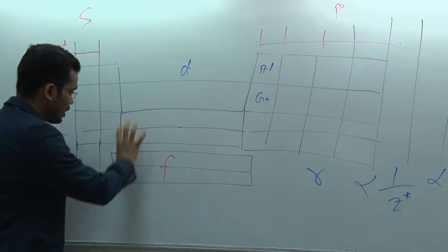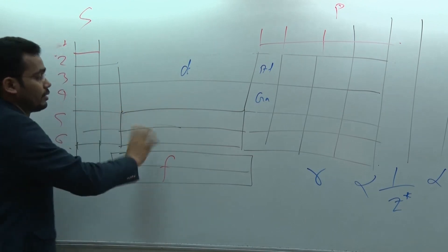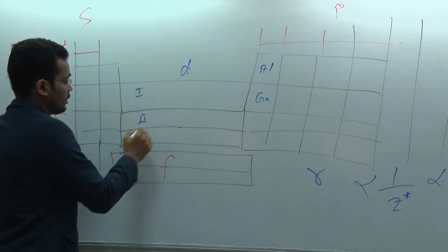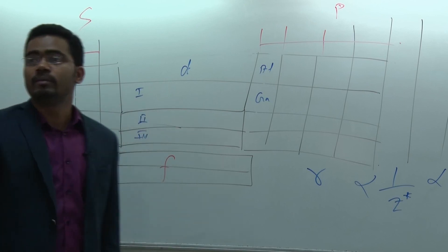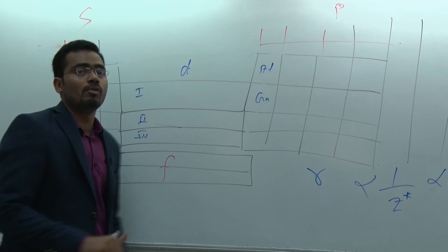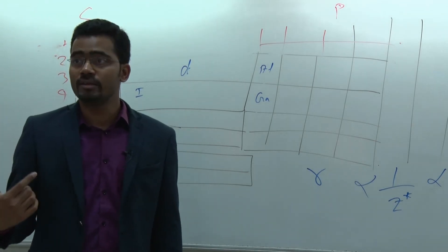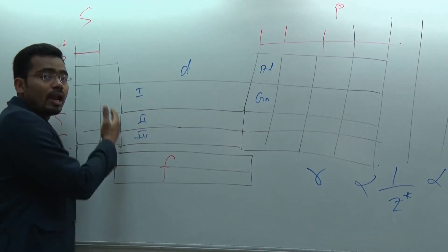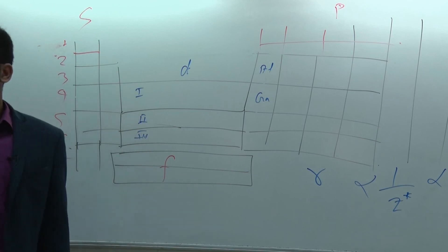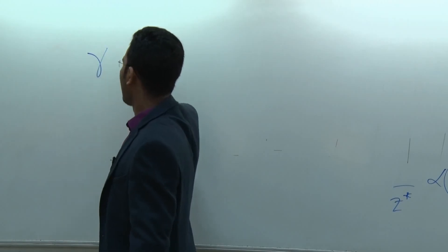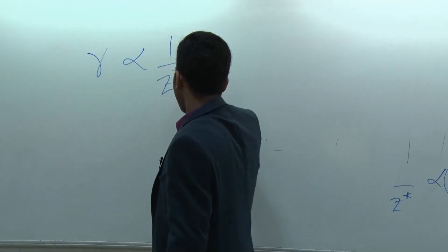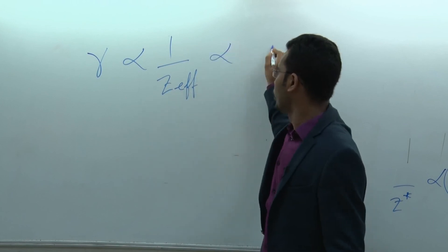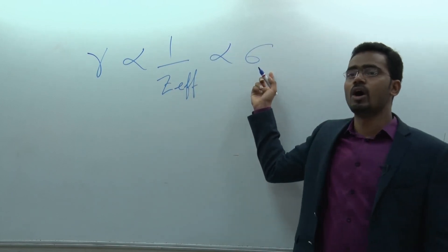The radius of the D-block elements in the second and third series is almost equal. There are three series in the D block, and the radius of the second and third series will be almost constant. The reason is that all elements in those series have fulfilled F orbitals, and F orbitals have poor shielding. Therefore, radius is inversely proportional to effective nuclear charge and directly proportional to the shielding constant.